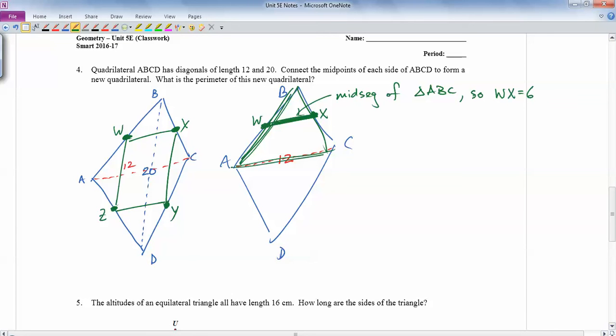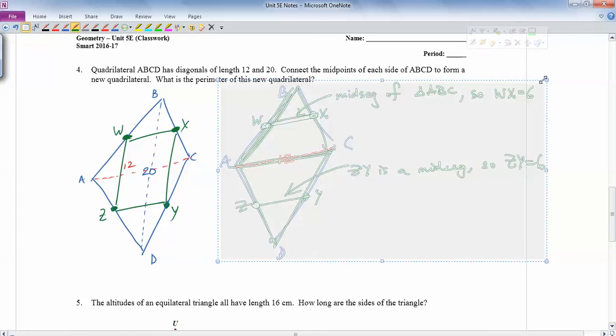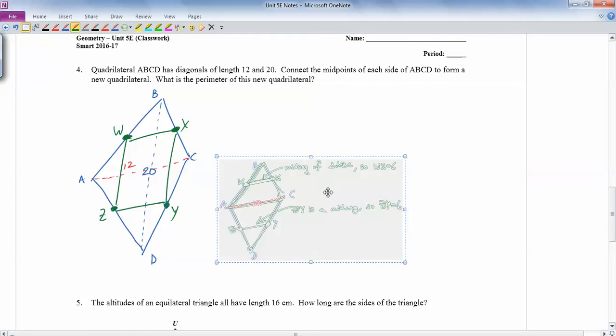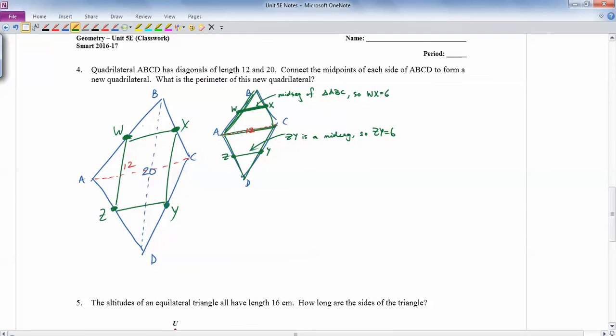And then the same deal happens down below, down here, when we connect this midpoint to this midpoint. Right? Z to Y. Z Y is a mid-segment. So Z Y ends up being half of 12, which is 6. Okay? So let me shrink this down a little bit. So now what we've got is this is 6 and this is 6.